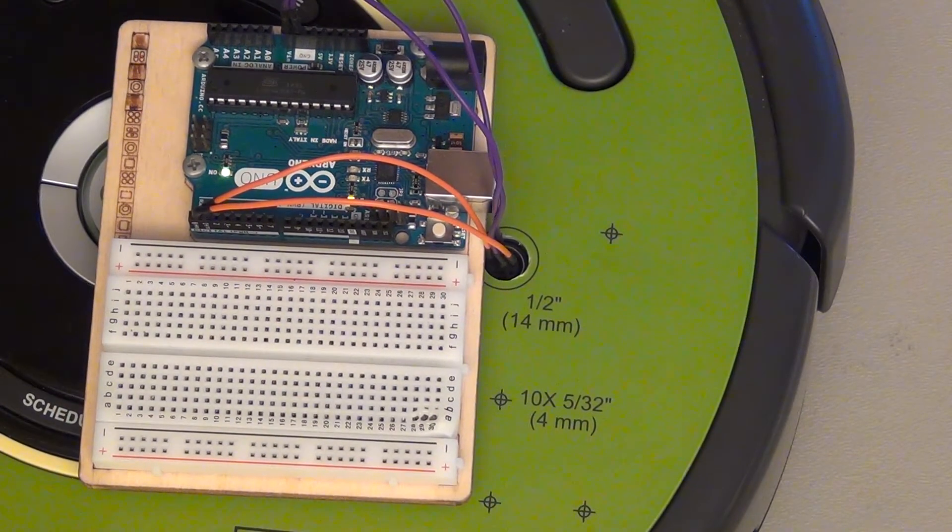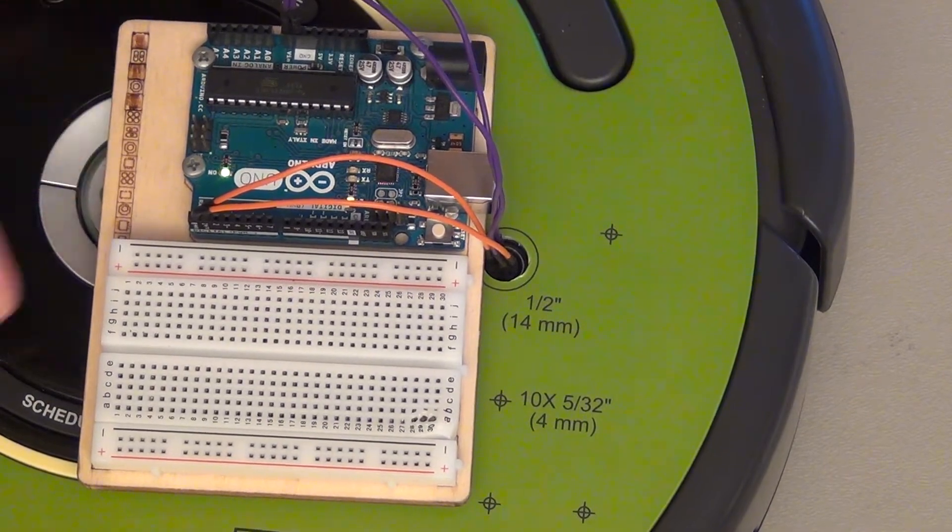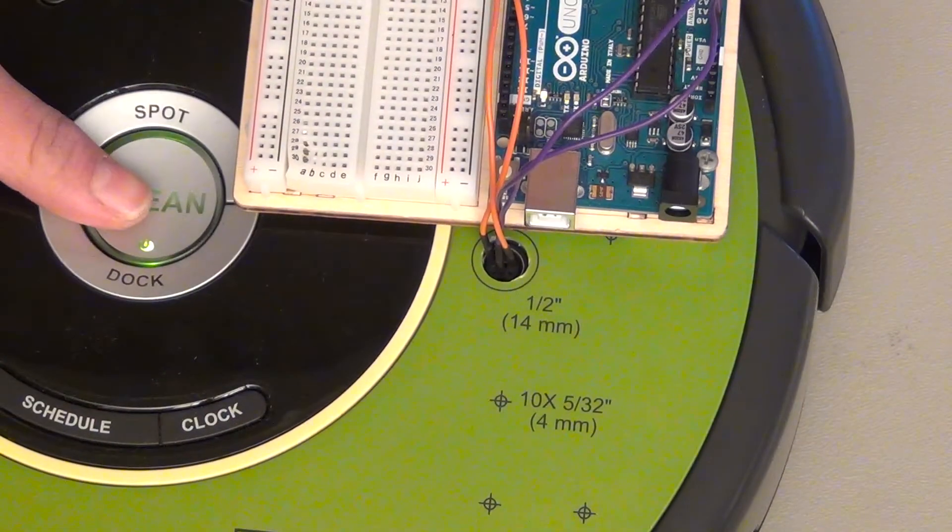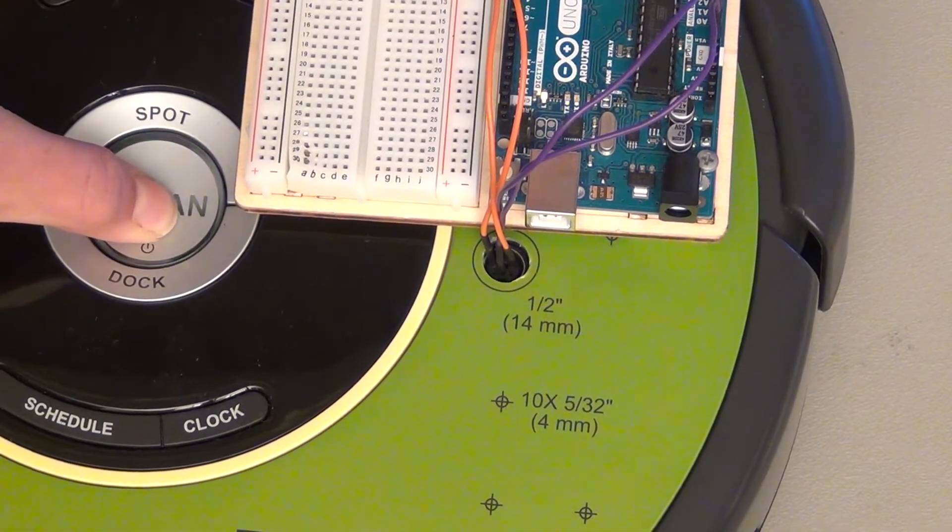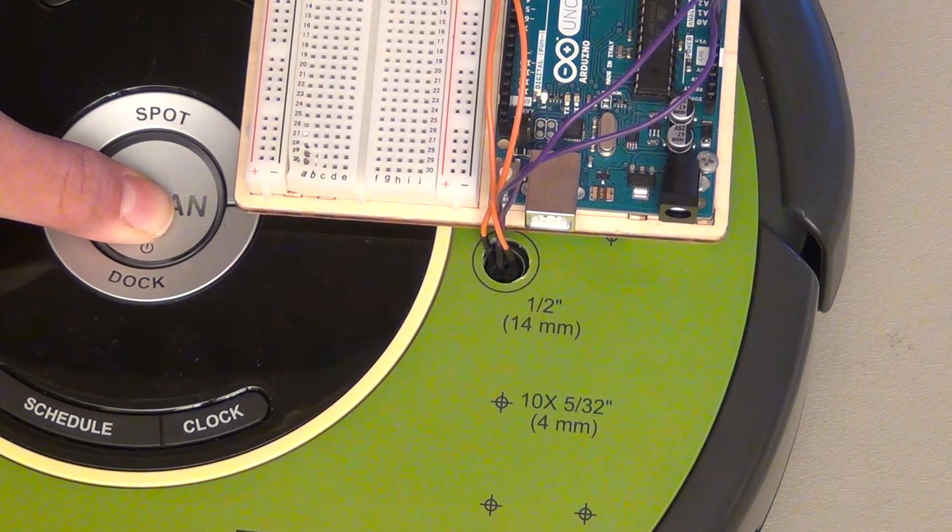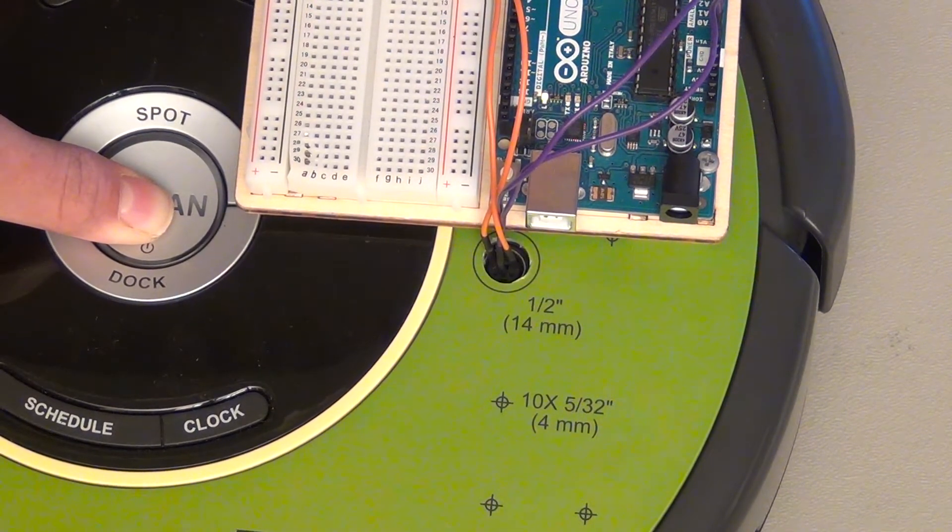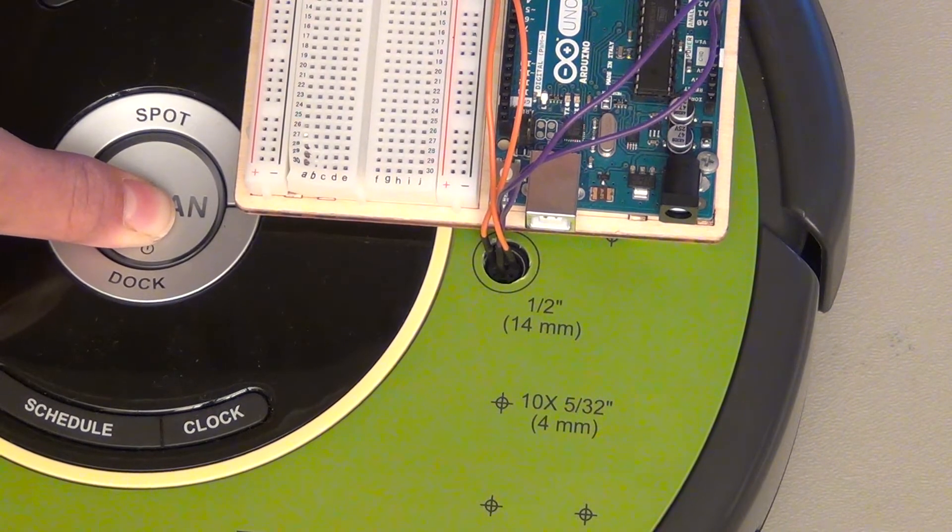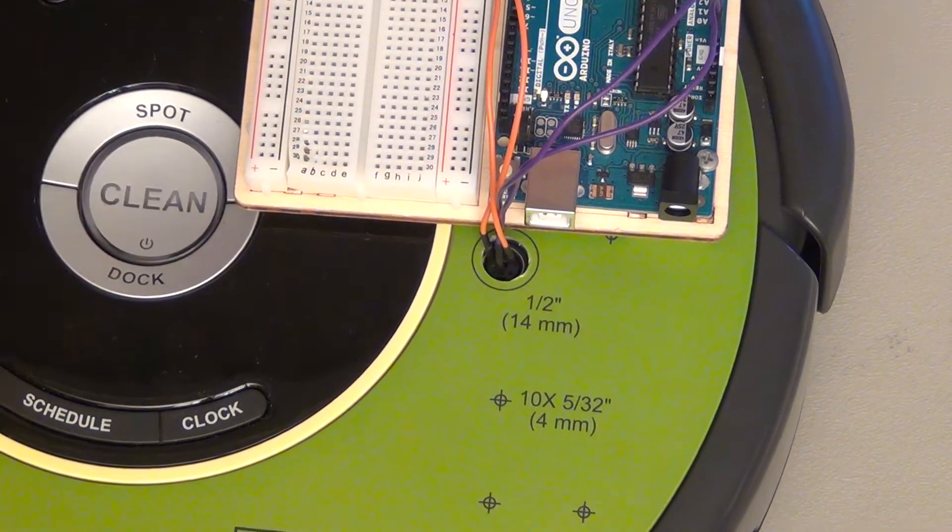So to change the baud rate, you just press and hold the clean button. Let's see if I can move this out of the way. You press and hold the clean button, and then it goes off, and then in a few seconds it'll play a series of tones. And after that, you can use it at a lower baud rate. And that's it.